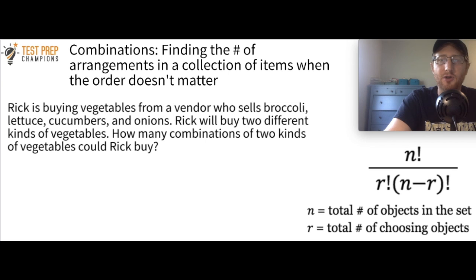So I think the best place to start learning combinations is by jumping right in with some examples that should be similar to what you'll get on the real test here. So this example says, Rick is buying vegetables from a vendor who sells broccoli, lettuce, cucumbers, and onions. Rick will buy two different kinds of vegetables. How many combinations of two kinds of vegetables could Rick buy? So there's two ways to do this. You can write it out by hand or make a diagram, or you could solve a question like this using the formula. So let me give you a chance to try this now.